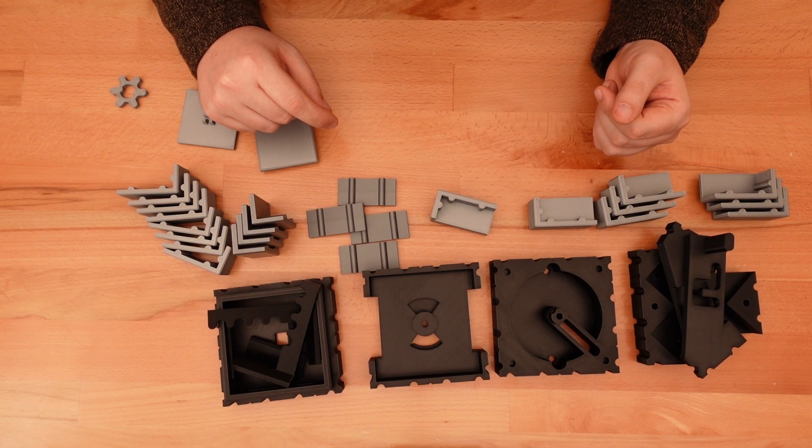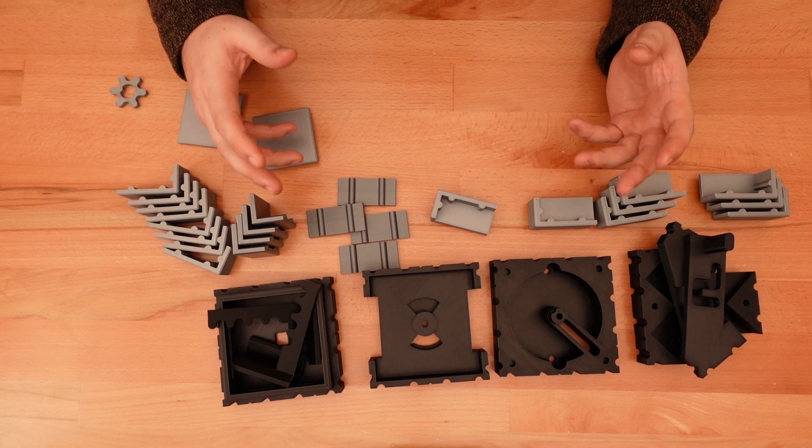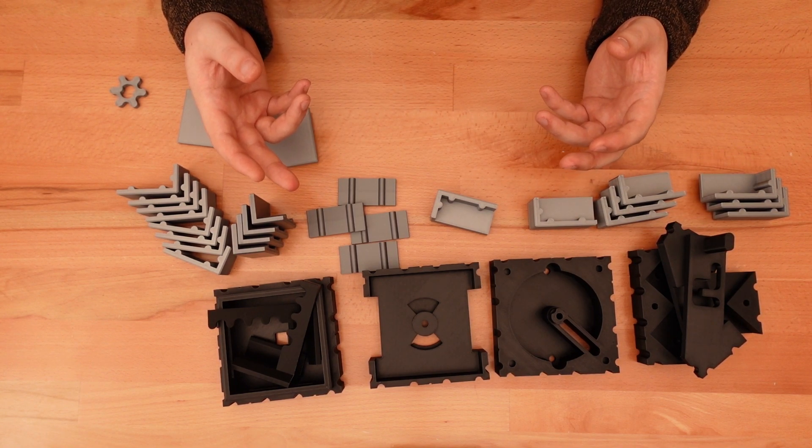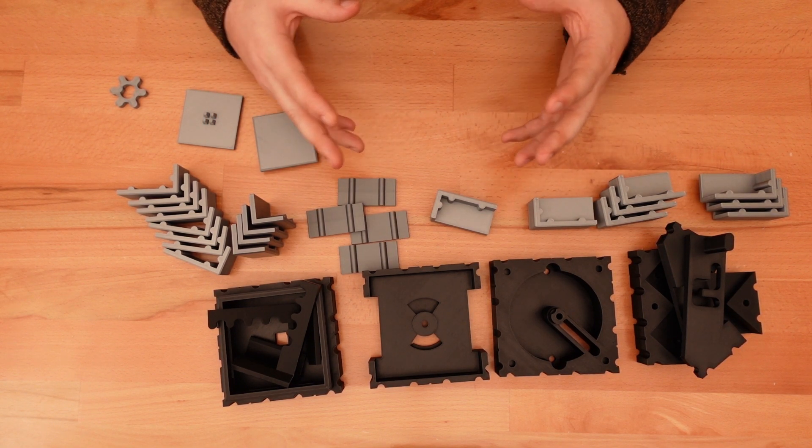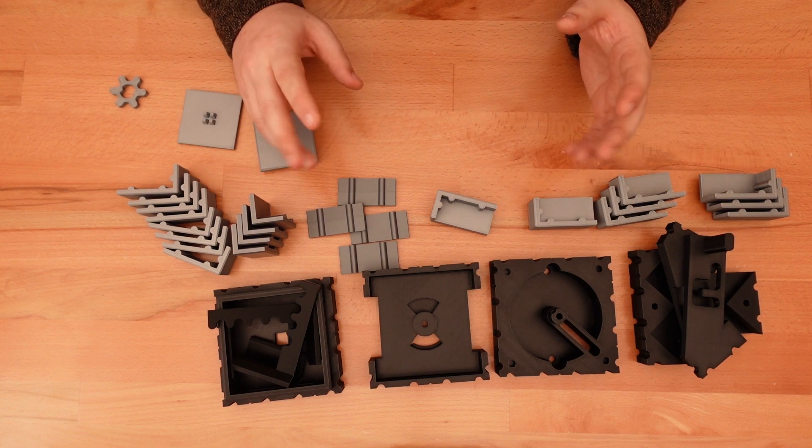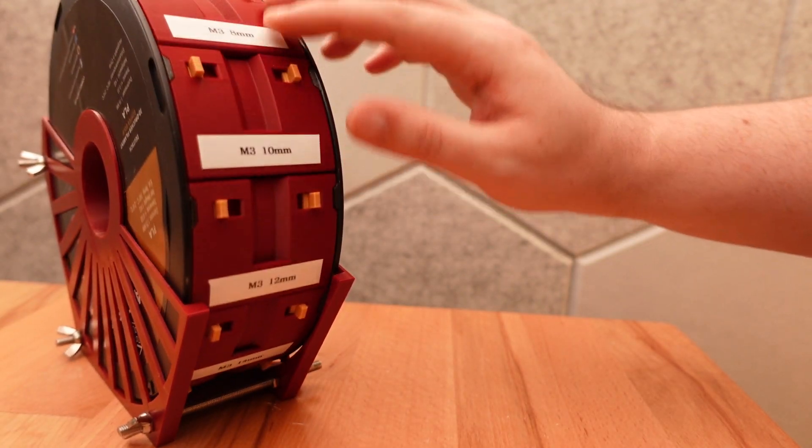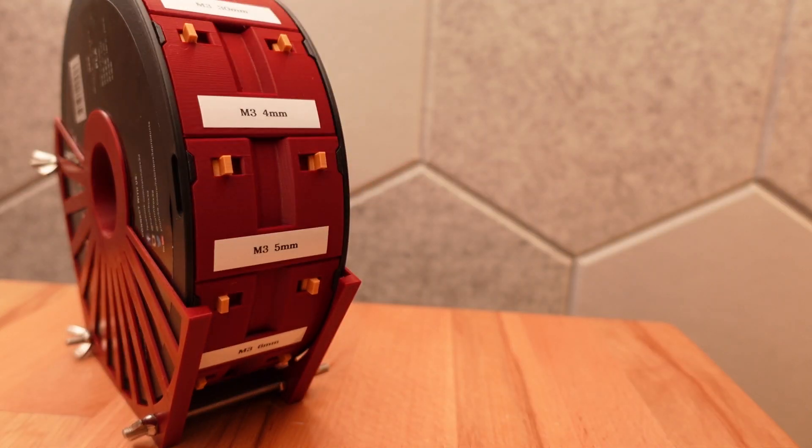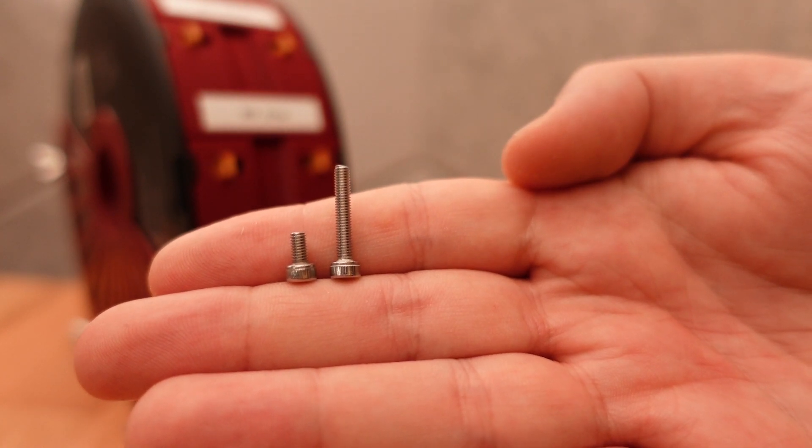Now that we have all the 3D printed parts, we do need a few bolts to keep everything together. Fortunately, I kept this design pretty loose, so you'll have a range of valid bolt sizes to work with this project. To lock level 1 and 2 together, we'll need two M3 bolts that are between 6 and 15mm long.